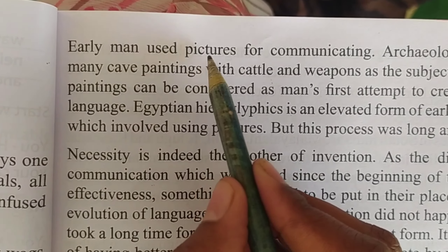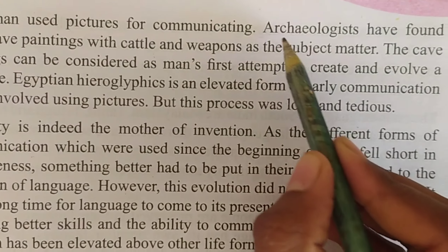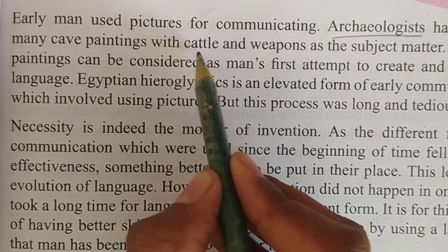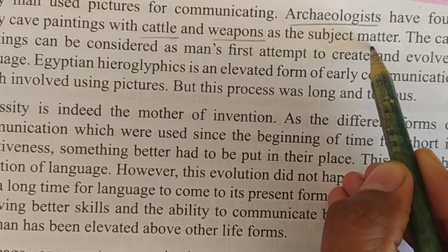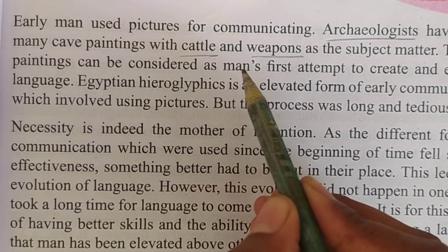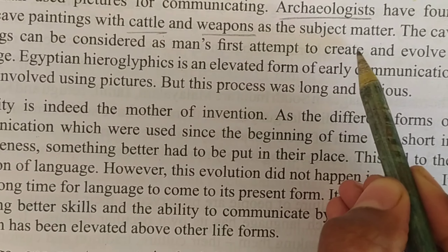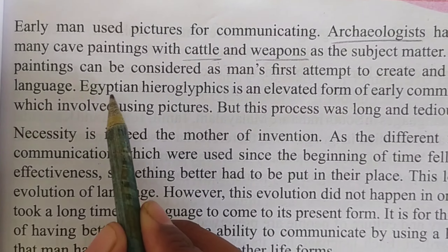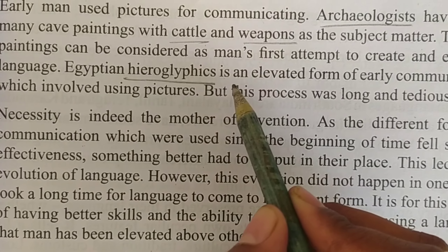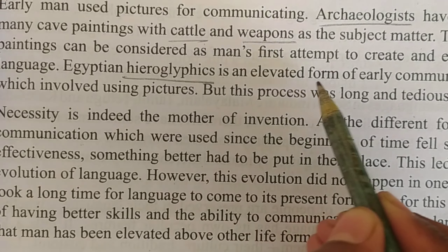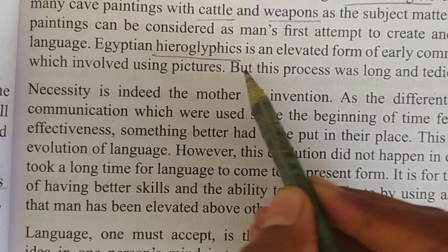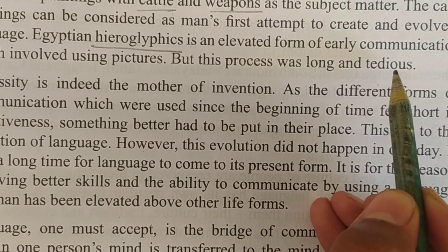Early man used pictures for communicating. Archaeologists have found many cave paintings with cattle, weapons and other subject matter. The cave paintings can be considered as man's first attempt to create and evolve a language. Egyptian hieroglyphics is an elevated form of early communication which involved using pictures, but this process was long and tedious.